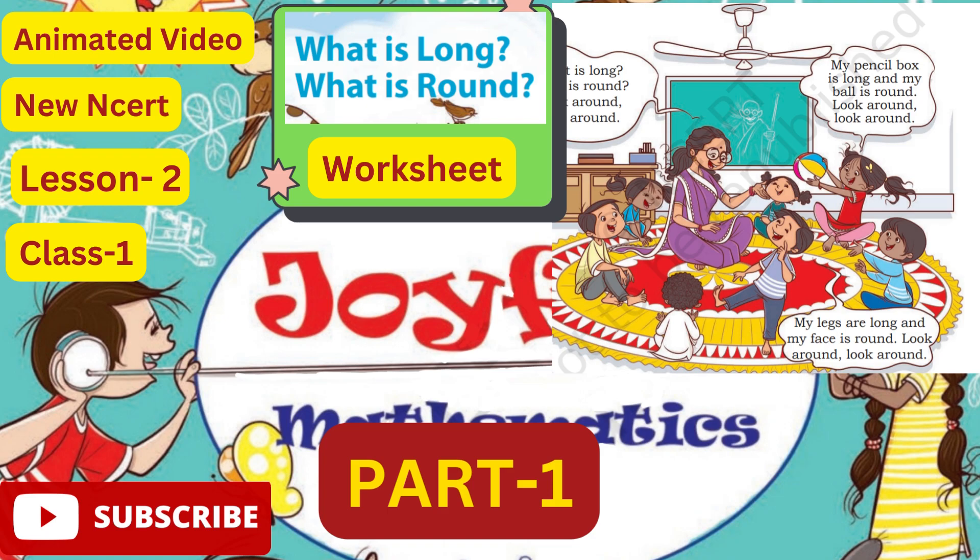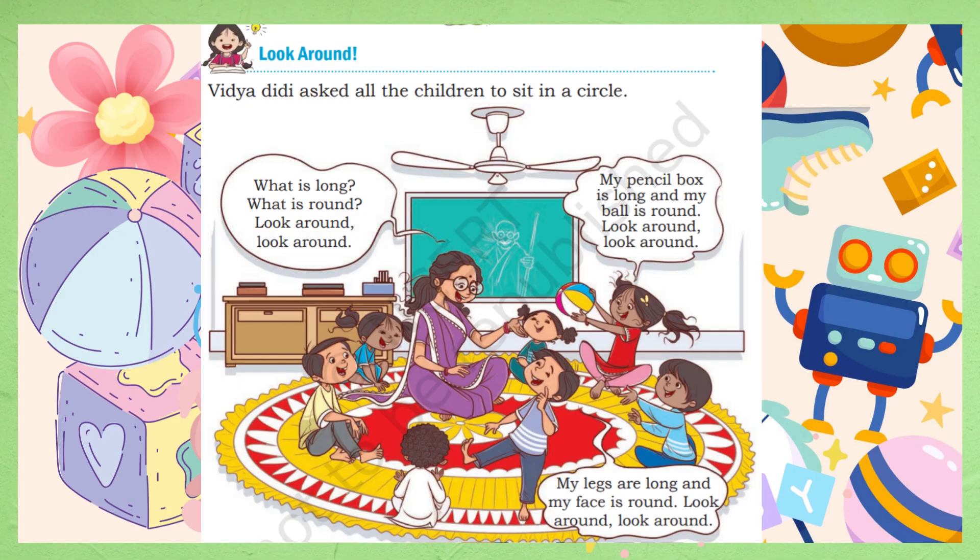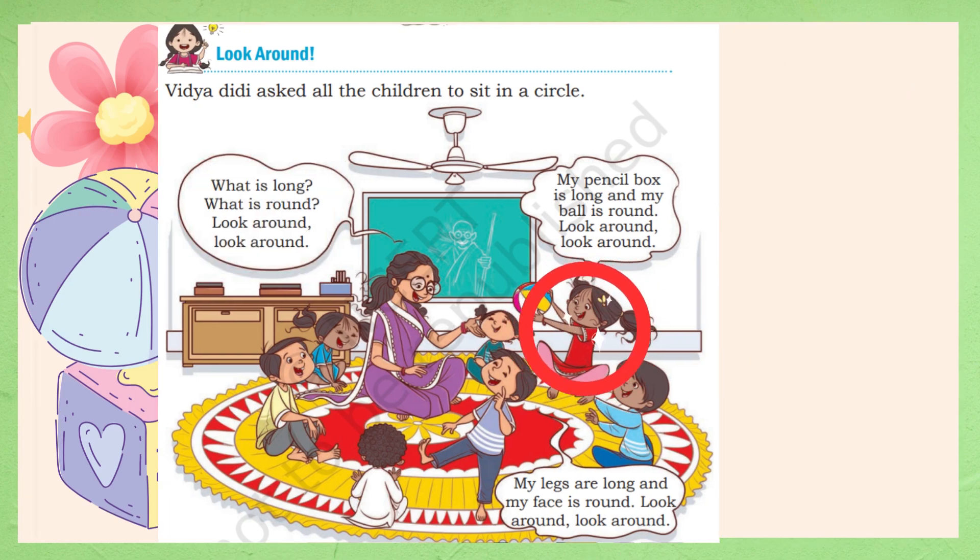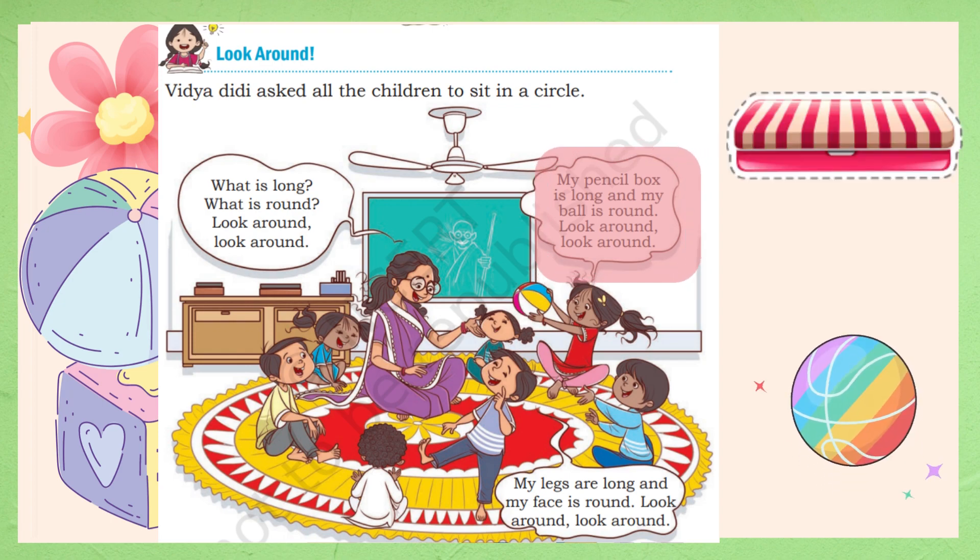Let's start this chapter. In the first part we can see 'Look Around.' Vidya didi asked all the children to sit in a circle. Then she asked: What is long? What is round? Look around. Look around your surroundings and tell what things are long and what things are round. So let's see what the students are saying. This girl is saying my pencil box is long and my ball is round.